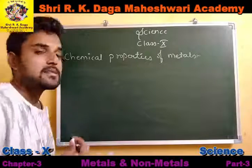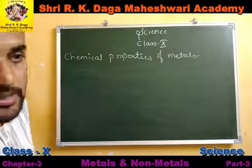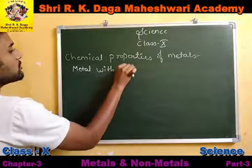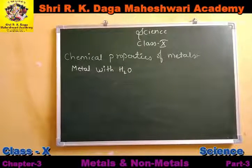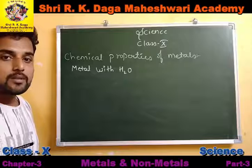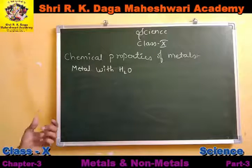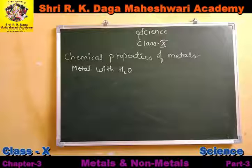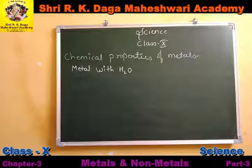We have seen the reaction of metals with air, meaning with oxygen. Now let's see the reaction of metals with water. Mostly, when non-metals are dissolved in water, they form acidic oxides. But when metals are dissolved in water, they mostly form basic oxides. Let's understand how basic oxides are formed and what products we get when metals react with water.